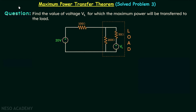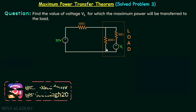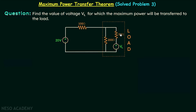In the previous lecture we solved problem number two on the maximum power transfer theorem, and now we are going to solve problem number three. In this problem we are required to find the value of voltage VL for which the maximum power will be transferred to the load. Observing the given network, we find two parallel branches forming the load: branch one has a 200 ohm resistor, and branch two has a 50 ohm resistor in series with voltage source VL. Before I explain the solution, I want you to pause and try to find VL on your own.